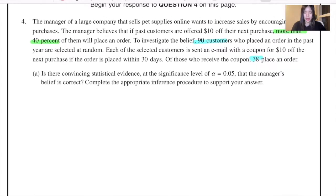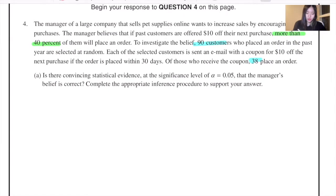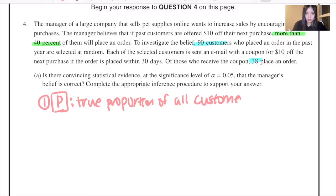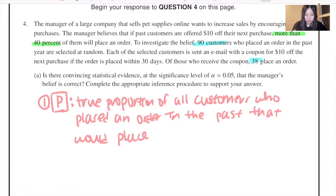So this asks us to conduct a hypothesis test. The first step would be to state the right statement. First of all, you need to define your variable, which is p today, which stands for the true proportion of all customers who placed an order in the past that would place another order, or place a repeated purchase order if offered a $10 off coupon.